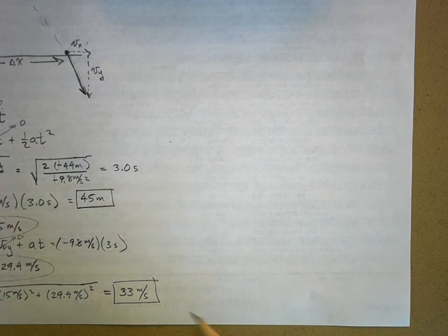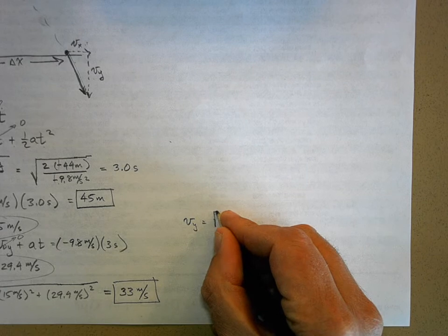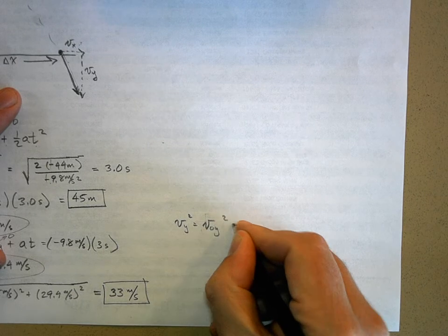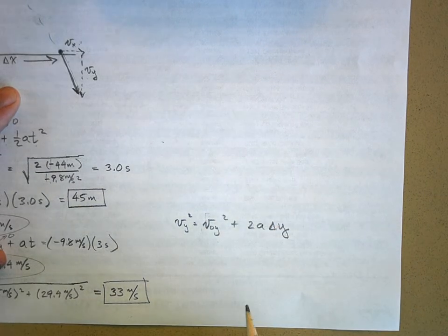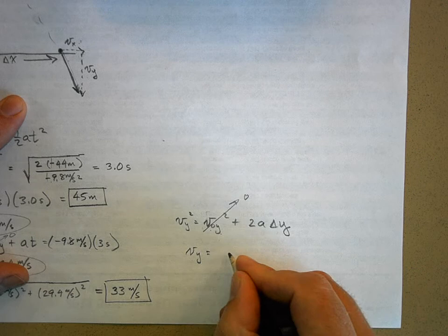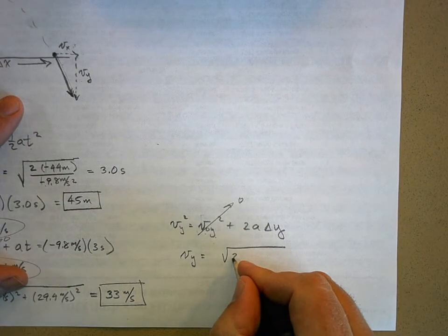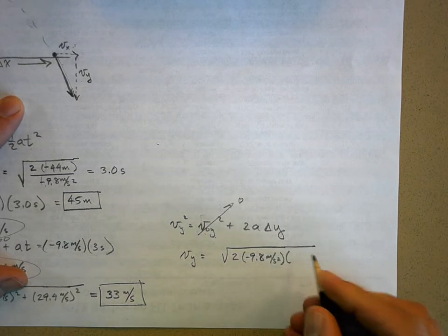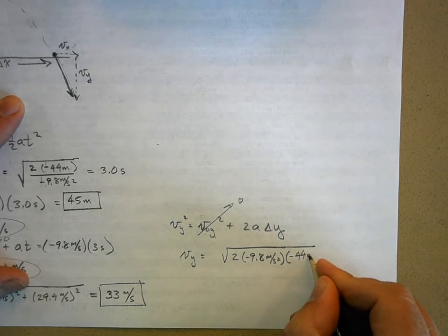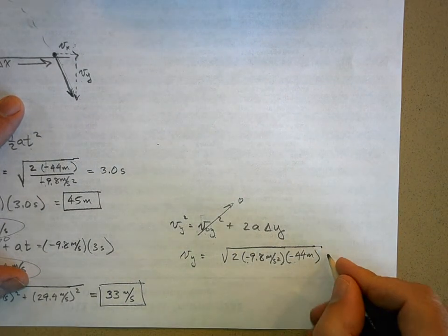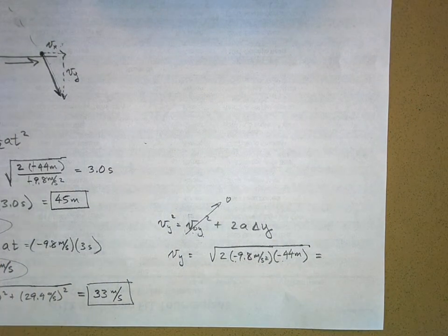Using the fourth kinematic equation: Vy² equals V-naught-Y² plus 2A·Delta Y. V-naught-Y is zero, so Vy equals the square root of two times negative 9.8 meters per second squared times Delta Y of negative 44 meters. You need that negative to cancel the other negative. When you compute this, you get the same answer: 29.4 meters per second.